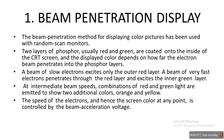A beam of slow electrons excites only the outer red layer. A beam of very fast electrons penetrates through the red layer and excites the inner green layer.